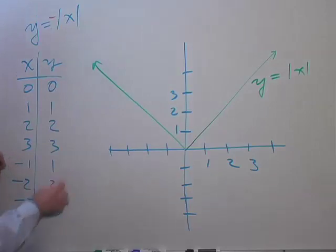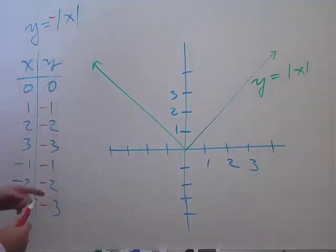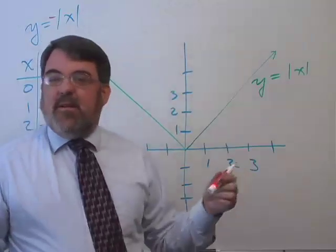That's going to change all the y values, isn't it? Except for zero, it won't change. But if I do that, y equals negative absolute value of x, it changes all the signs of the y's. And what do you suppose is going to happen?